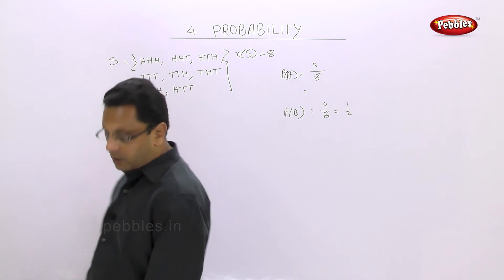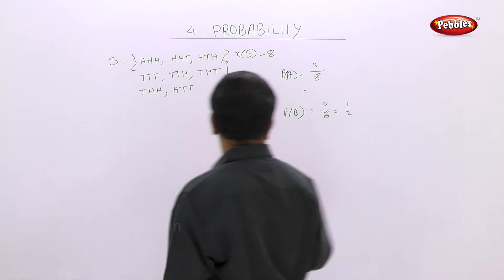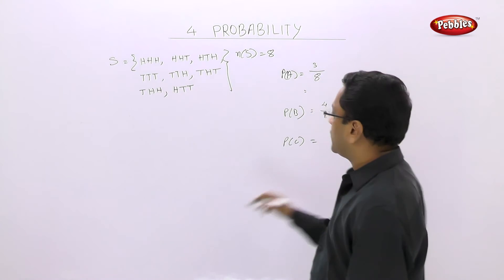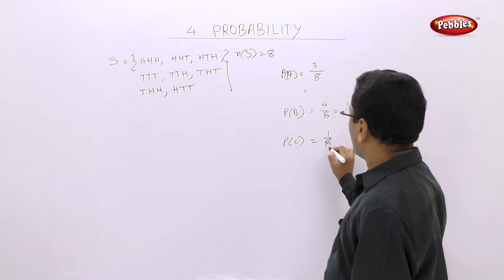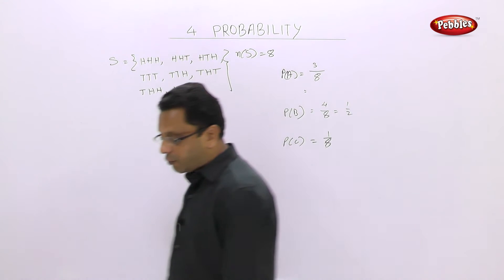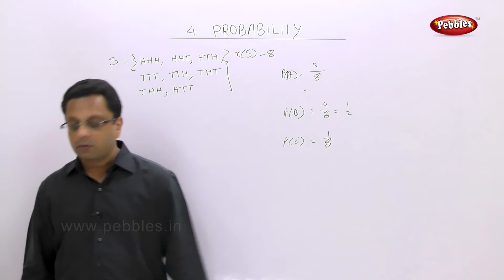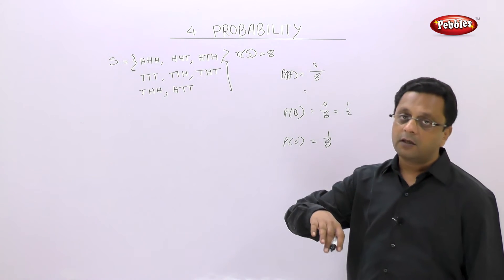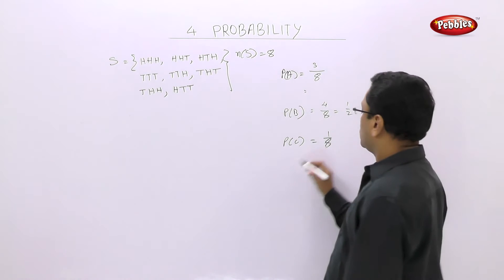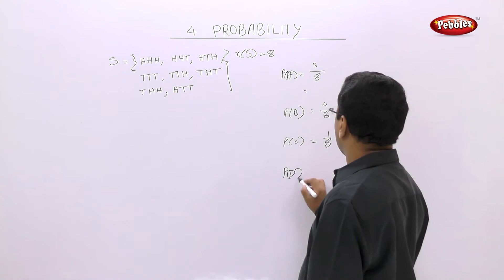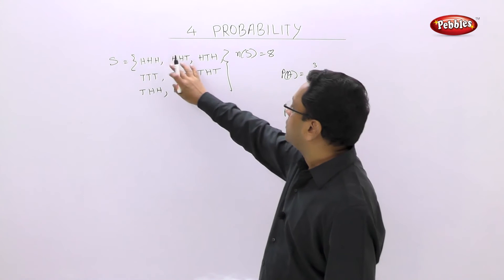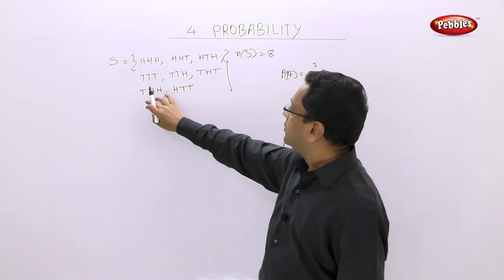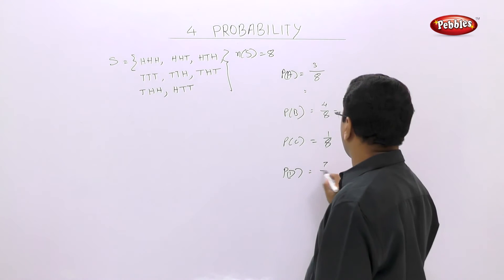Third event: getting no head. There is only 1 such outcome — TTT. So the probability is 1/8. Fourth event: getting at most 2 tails. That means no tails to 2 tails. Counting those outcomes: 1, 2, 3, 4, 5, 6, 7 outcomes. So P(D) = 7/8.